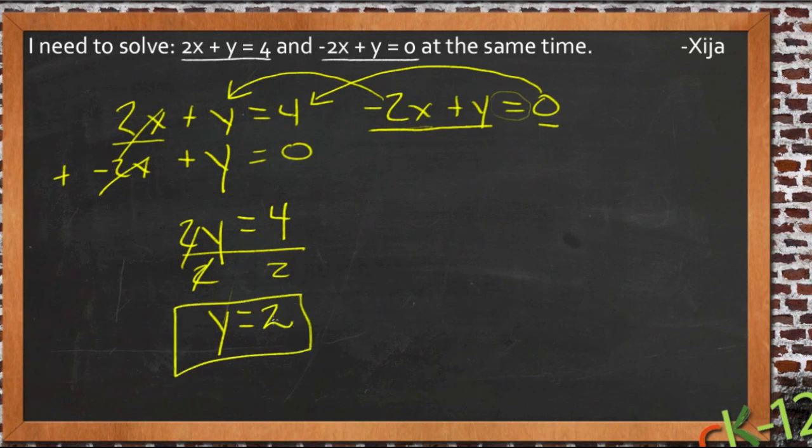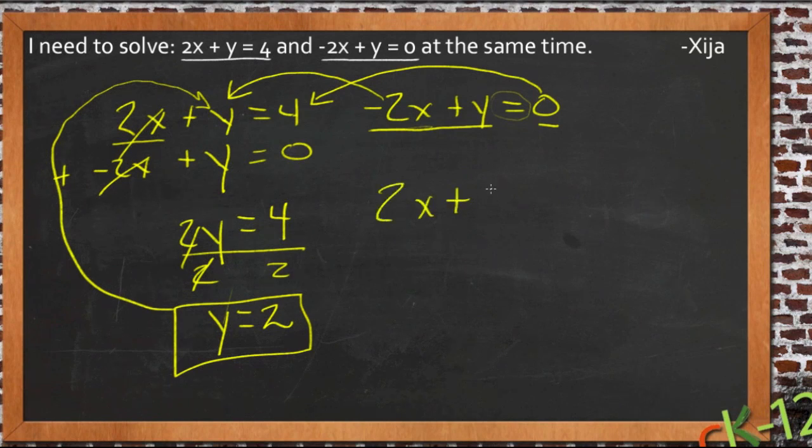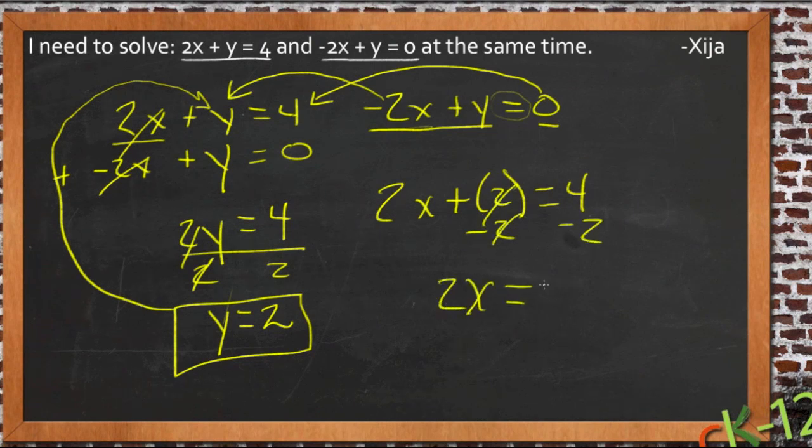Now that we have a numerical value for y, we can take that information and put it back into one of our two starting equations, say right here, and we'll get 2x plus 2 instead of just y equals 4. If we subtract 2 from both sides, this will go away. And we'll get 2x equals 2, 4 minus 2, divide both sides by 2. That'll cancel. That'll cancel. We have 1x equals 2 divided by 2, which is 1.